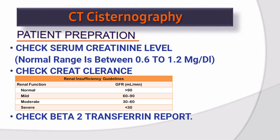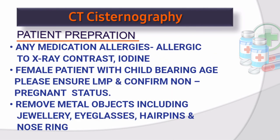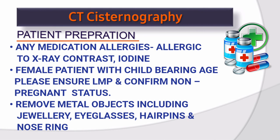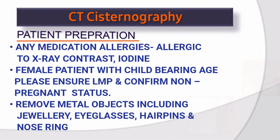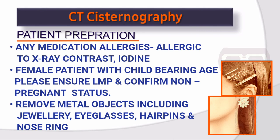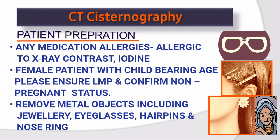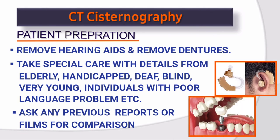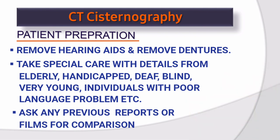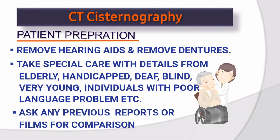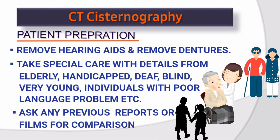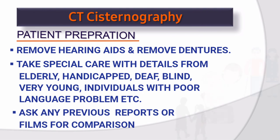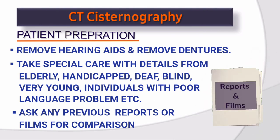Check beta-2 transferrin report. Check for any medication allergies or allergy to x-ray contrast or iodine. Female patients of childbearing age — ensure LMP and confirm non-pregnant status. Remove metal objects including jewelry, eyeglasses, hairpins, and nose ring. Remove hearing aids and dentures. Take special care with elderly, handicapped, deaf, blind, very young, or individuals with poor language ability. Ask for any previous reports or films for comparison.